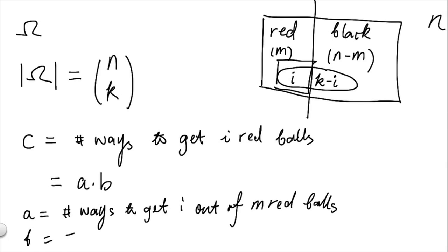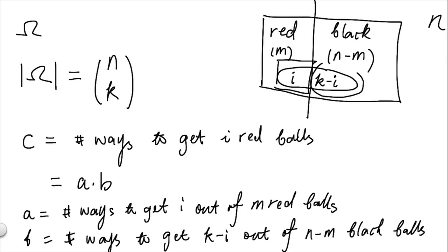And similarly, we'll define b as the total number of ways to get the remaining k minus i balls out of the set n minus m black balls. This corresponds to the total number of ways to select the subset right here in the right side of the box. Now, as you can see, once we have a and b, we've multiplied them together, and this yields the total number of ways to get i red balls.